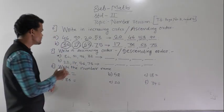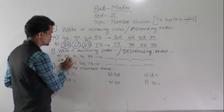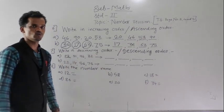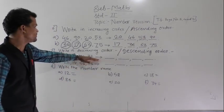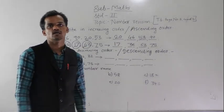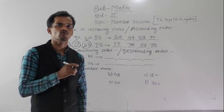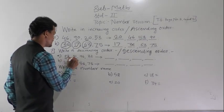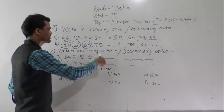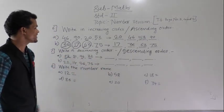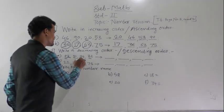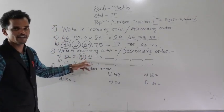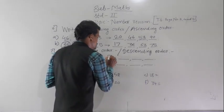The numbers are 82, 51, 96, and 32. These are all two digit numbers, so we compare the tens digit: 8, 5, 9, and 3. The greatest number here is 96, so write 96 first.